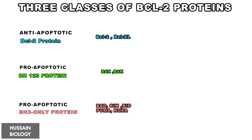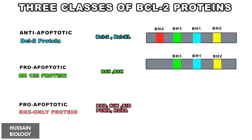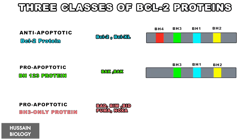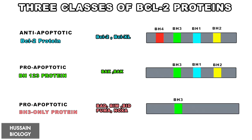Now let's look at the structural differences according to these domains. The anti-apoptotic proteins have all four domains: BH4, BH3, BH1, and BH2. The pro-apoptotic BH1-2-3 proteins have only three domains — BH1, BH2, and BH3 — meaning the BH4 domain is absent. In the last class, the BH3-only proteins have just one domain, the BH3 domain, which is why they are called BH3-only proteins.